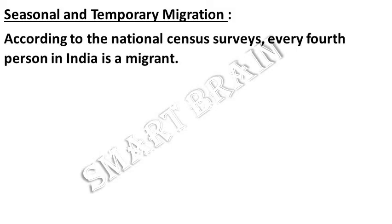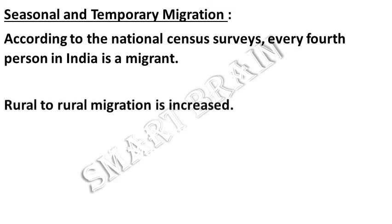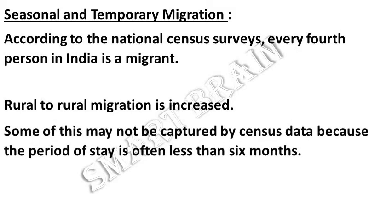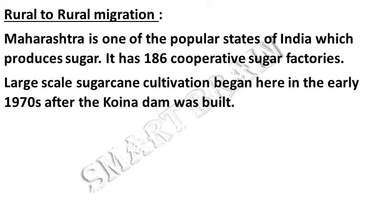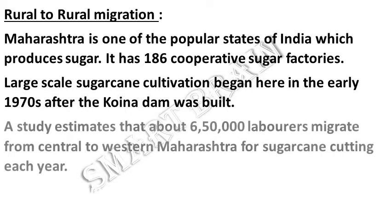Seasonal and temporary migration: According to national census surveys, every fourth person in India is a migrant. Rural to rural migration has increased, though some of this may not be captured by census data because the period of stay is often less than six months. Maharashtra, one of the popular states of India which produces sugar, has 186 cooperative sugar factories. Large-scale sugarcane cultivation began in the early 1970s after the Koyna Dam was built. A study estimates that about 650,000 laborers migrate from central to western Maharashtra for sugarcane cutting each year.